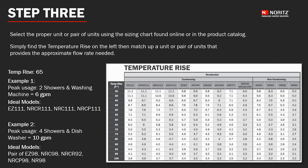The third and final step is to select the proper unit or pair of units using the sizing chart found online or in our product catalog. Simply find the temperature rise on the left and match up a unit or pair of units that provide the approximate flow rate needed. Since we determined our temperature rise was 65 and a peak flow of 6 gallons per minute for example 1, we can see that any of the 111 series provides 6 or just about 6 gallons per minute and would be a great choice.